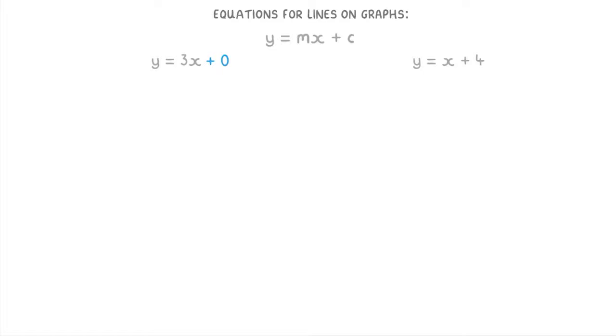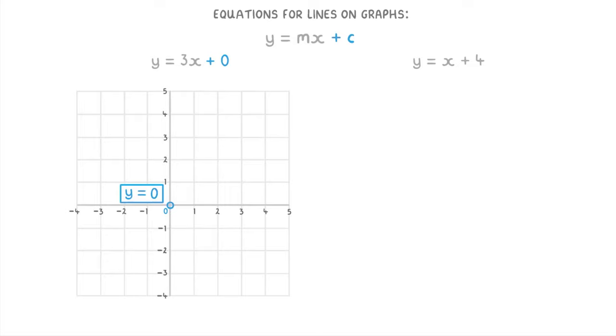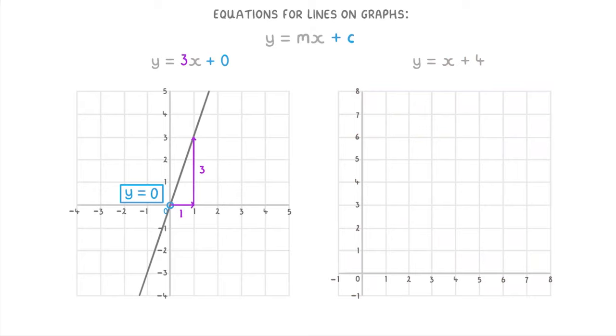However, if there's no number after the x term, you can just think of it as a plus 0, so c is 0, which means that it crosses the y-axis at y equals 0. And the 3x tells us that the line has a gradient of 3.